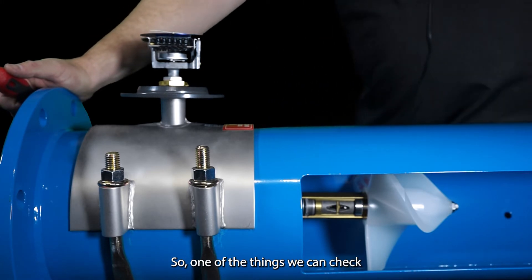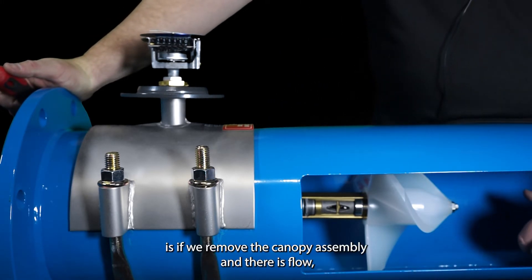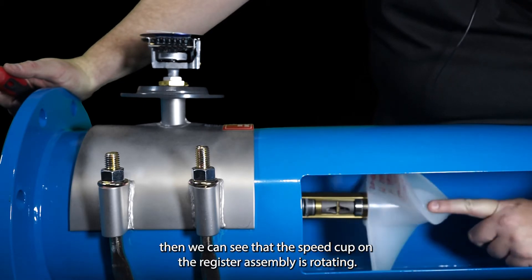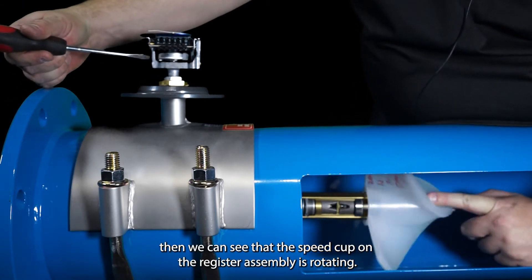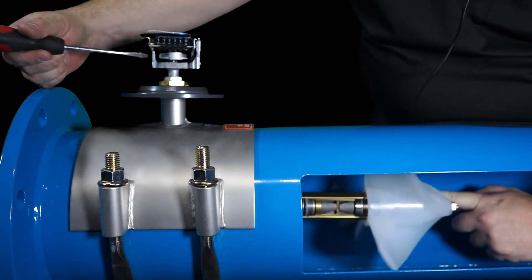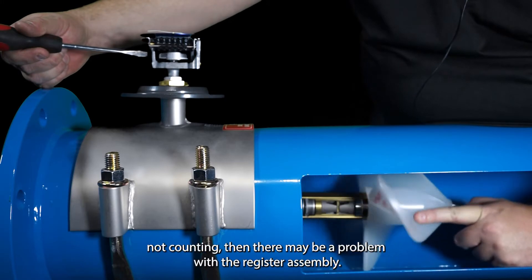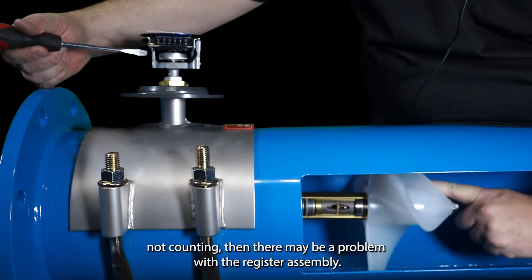So one of the things we can check is if we remove the canopy assembly and there is flow, then we can see that the speed cup on the register assembly is rotating. In that case if your needle is not reacting or your totalizer is not counting then there may be a problem with the register assembly.